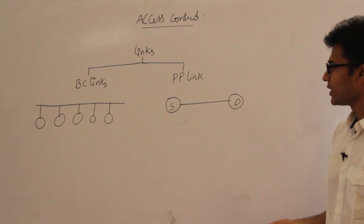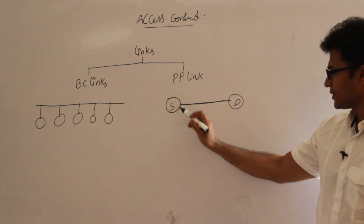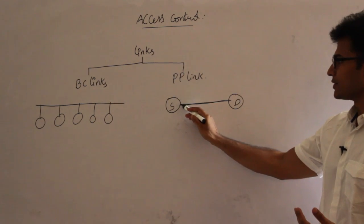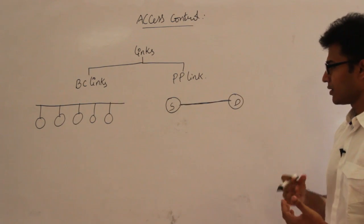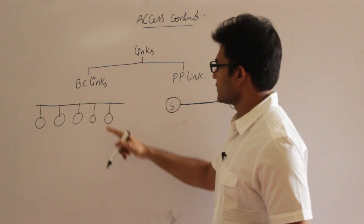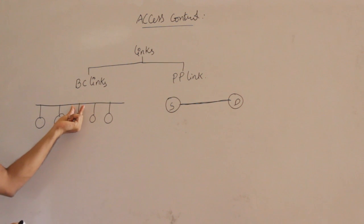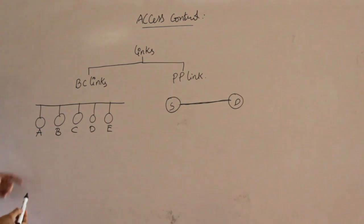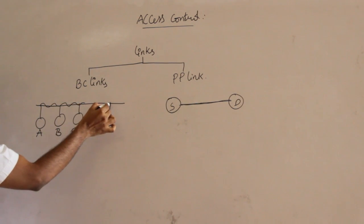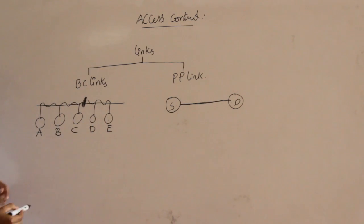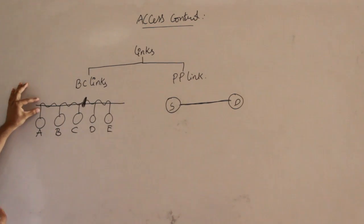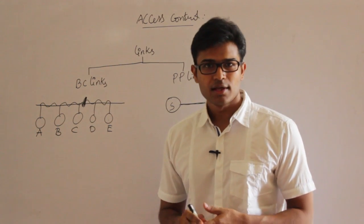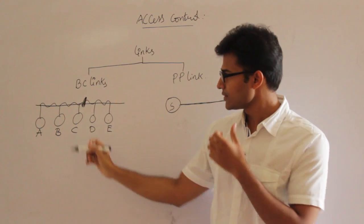Coming to the point-to-point channel, there is not much difficulty here. If the link is full duplex — meaning data can go in both directions at any time — there is no problem. The sender can send data and the receiver can receive data, both can transmit at any time. But in a broadcast link, since many stations are accessing the same channel at the same time, if station A is transmitting and at the same time station E is transmitting, there will be a collision. So access to this link has to be controlled.